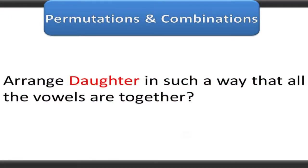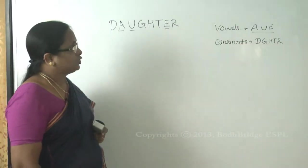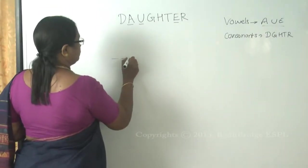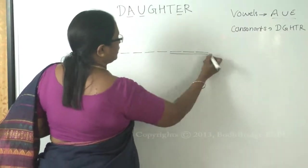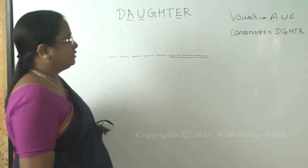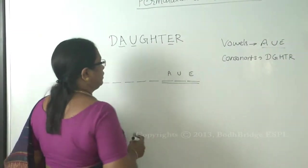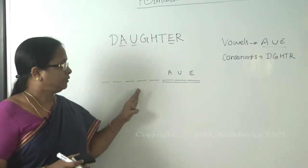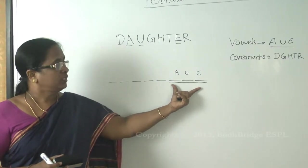Arrange 'daughter' such that all the vowels are together. You have to consider all three vowels — A, U, E — which have to always be together. You have eight slots: one through eight. Combine these three slots which are fixed for the vowels A, U, E. Now consider all the consonants as a single slot or single event, and the three vowels also as a single event since they must always be together.